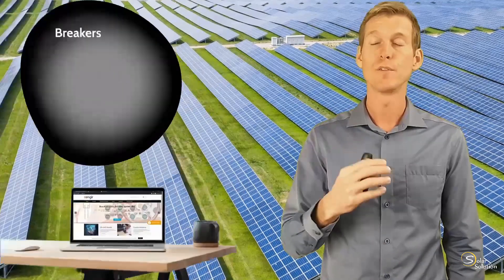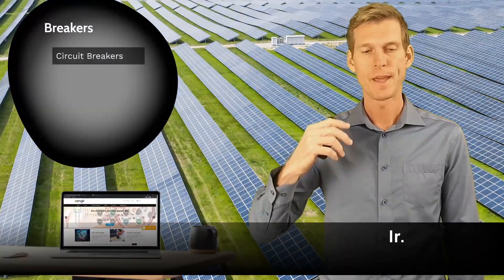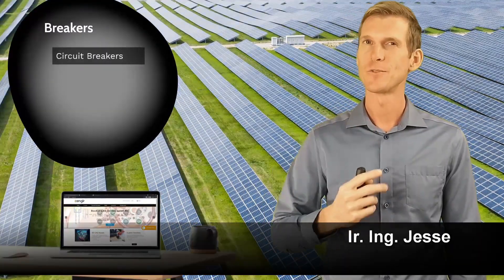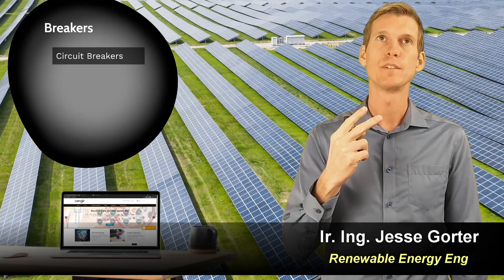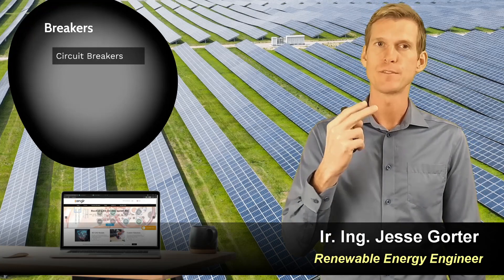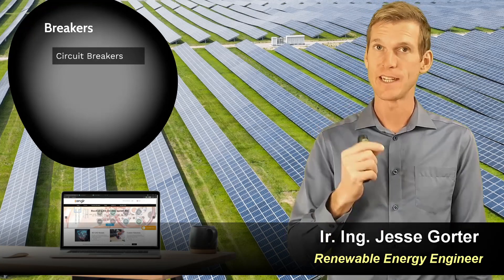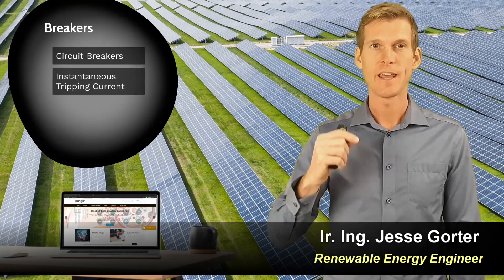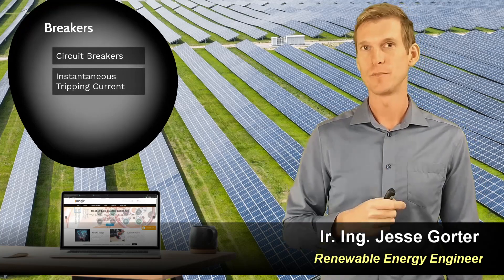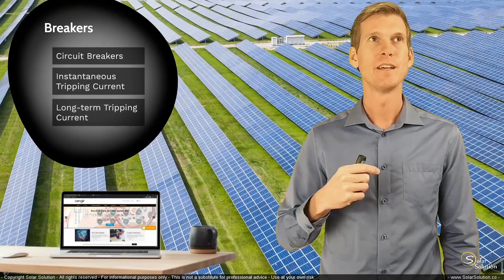Breakers are officially referred to as circuit breakers. The interesting thing with breakers is that they have two different ratings for the tripping current: an instantaneous tripping current rating and a long-term tripping current rating.